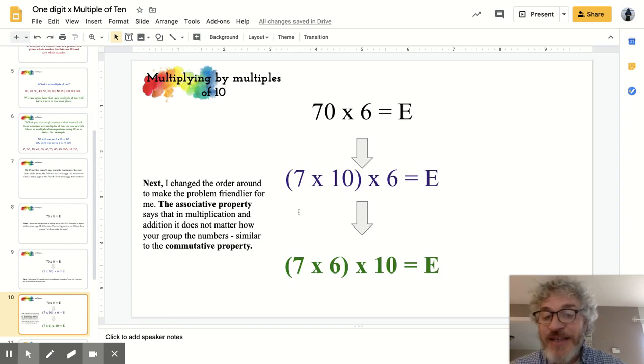Next, I changed around the order of the problem to make it friendlier for me. To do that, I used the associative property. Okay, so here is what we just went over. 70 times 6 equals the number of eggs Mr. DeHaan has eaten. 7 times 10 times 6 equals the number of eggs Mr. DeHaan has eaten.